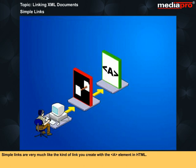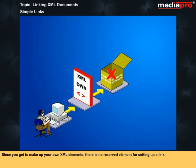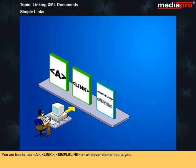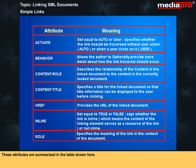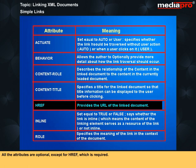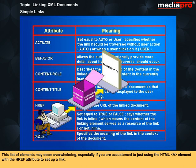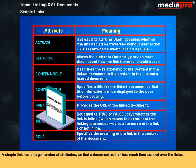Simple links are very much like the kind of links you create with the A element in HTML. Since you get to make up your own XML elements, there is no reserved element for setting up a link. You are free to use 'a', 'link', 'simplelink', or whatever element suits you. What is reserved, however, is a set of attributes for the simple link elements you choose. These attributes are summarized in the table shown here. All the attributes are optional except for href, which is required.